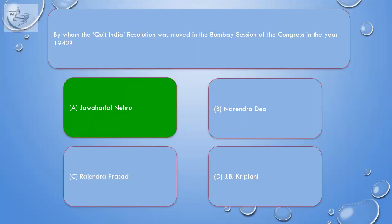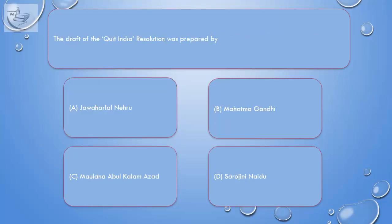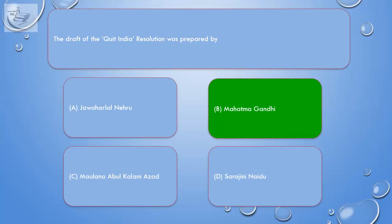Question: The draft of the Quit India Resolution was prepared by — A. Jawaharlal Nehru, B. Mahatma Gandhi, C. Maulana Abul Kalam Azad, D. Sarojini Naidu. Correct answer is B: Mahatma Gandhi.